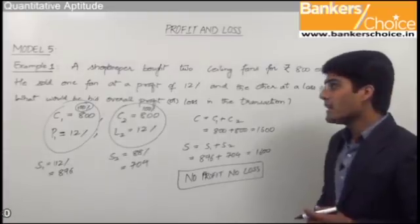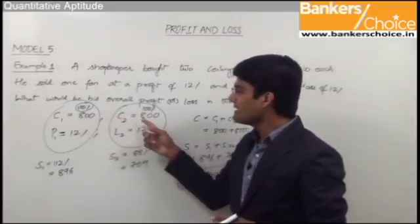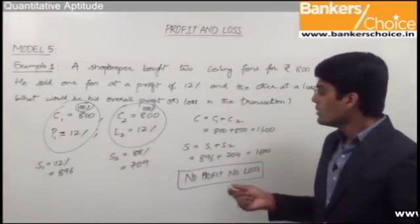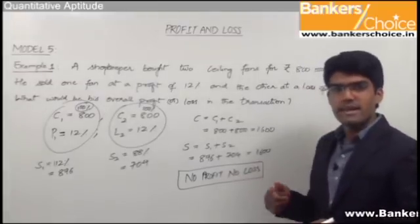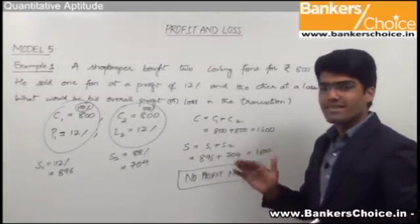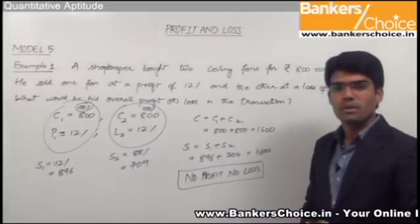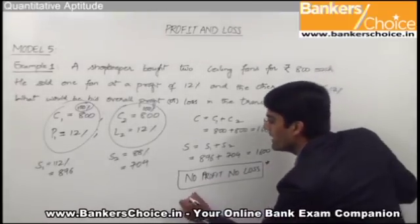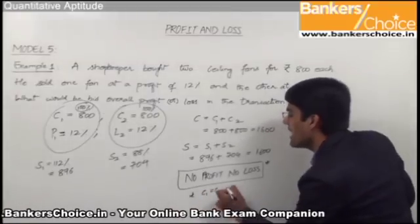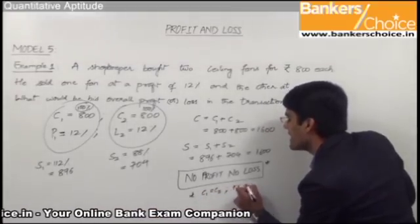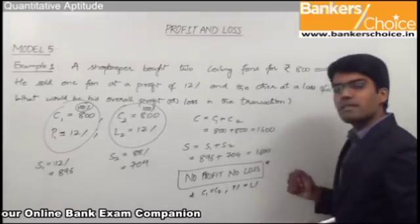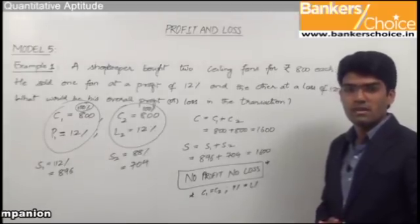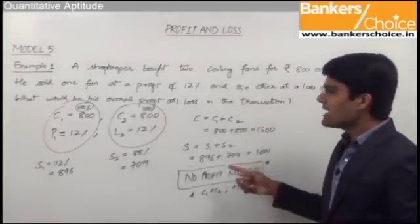We can now understand that whenever the cost price of two articles are the same and the profit percentage equals the loss percentage, the answer is always no profit no loss. This rule applies only when both conditions are satisfied: the cost prices are equal AND the profit percentage on one article equals the loss percentage on the other. Otherwise, follow the general procedure.